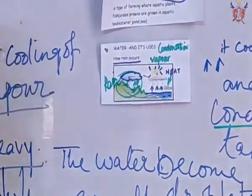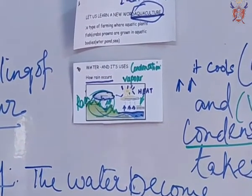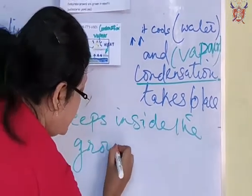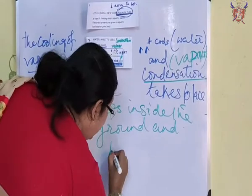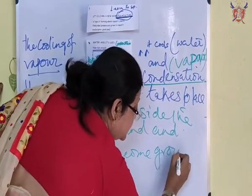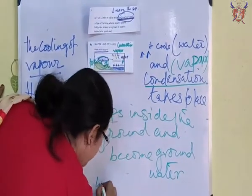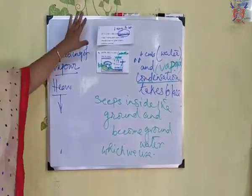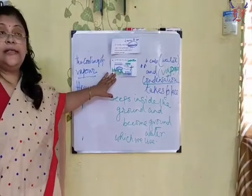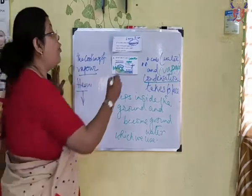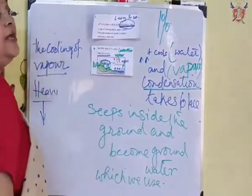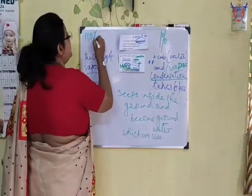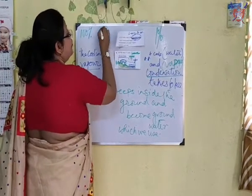This rain water seeps inside the ground and becomes ground water, which we use. Remember, only 1% of the ground water is usable. The total water is 100%, but only 1% of it is usable.